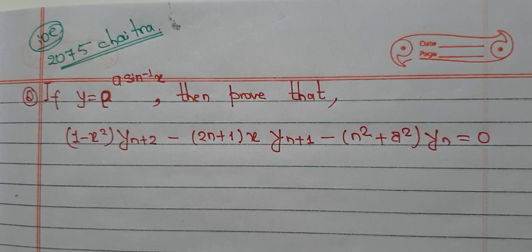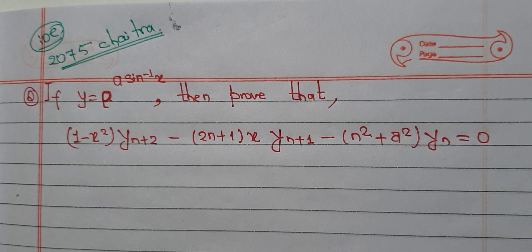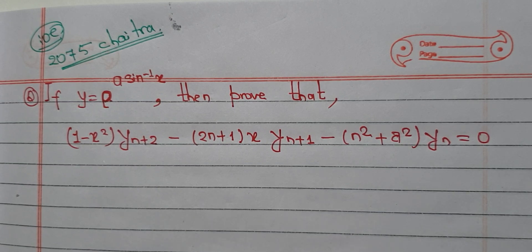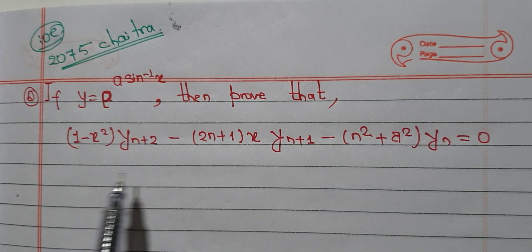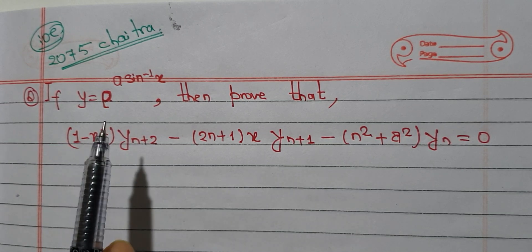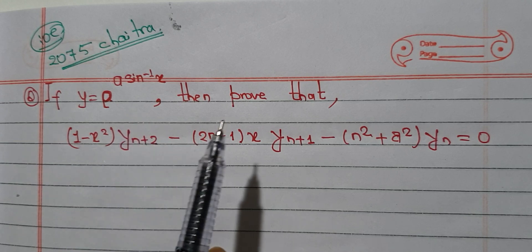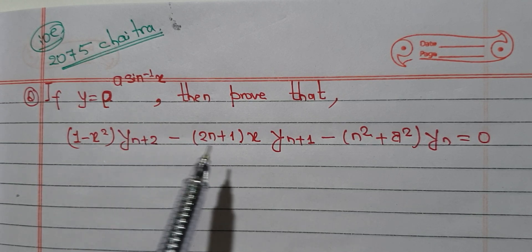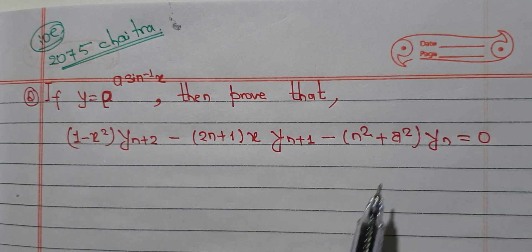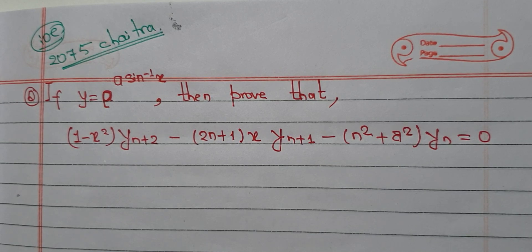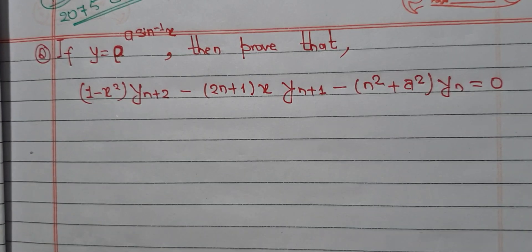Welcome back to the engineering lectures. This is from the 2075 Chaitra past question. We are going to solve a past question — finding the nth derivative using Leibniz's theorem. We need to prove using Leibniz's theorem, where y equals e to the power a·sin⁻¹x.